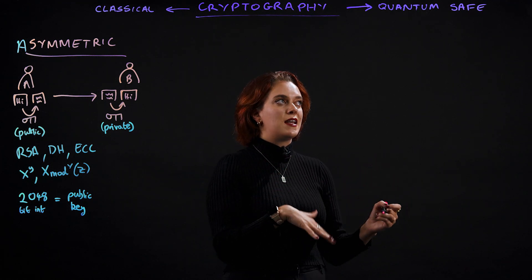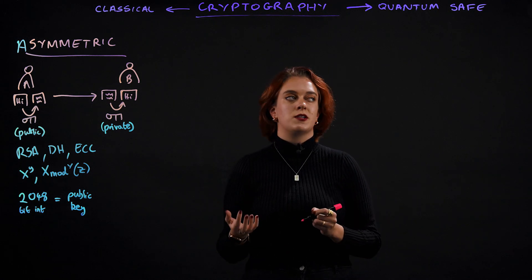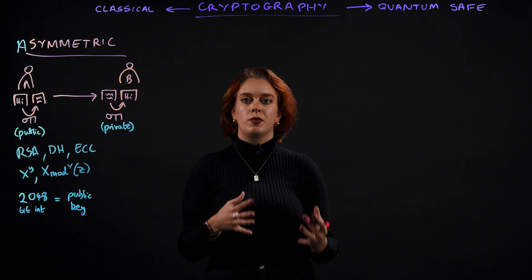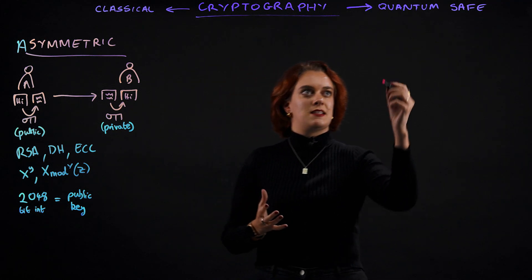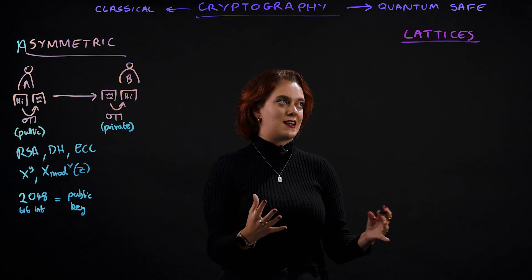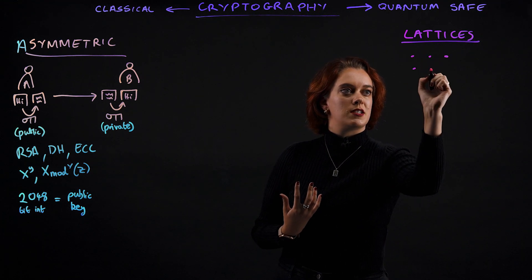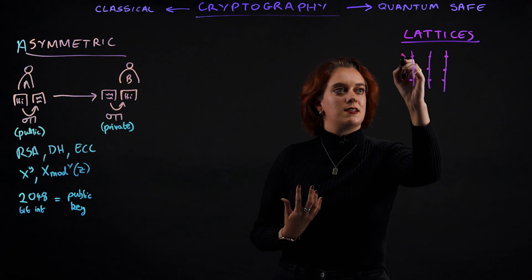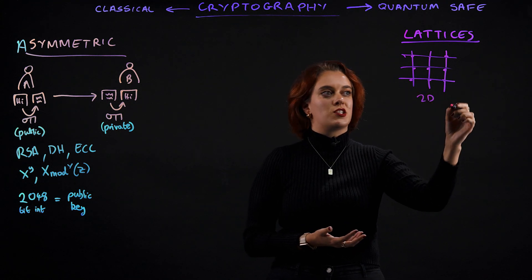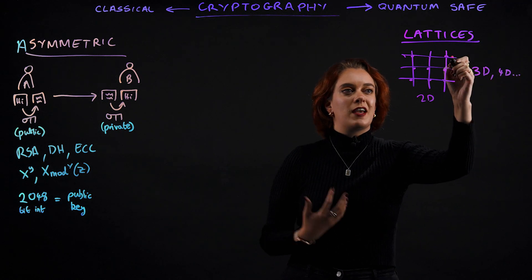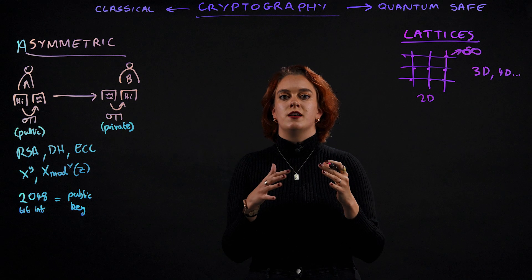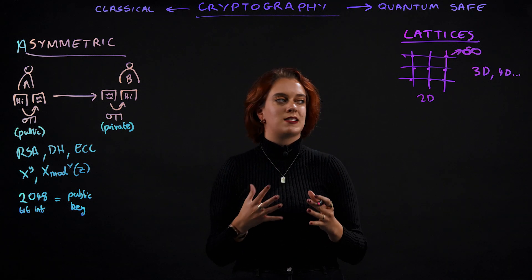Quantum-safe algorithms are based on mathematical problems that neither classical nor quantum computers can solve efficiently. They're normally based on geometric problems rather than numerical ones. One example is mathematical problems that are based on lattices. So let's have a quick review on lattices. Lattices could be very simple like this, just a grid of points with lines in between them that can represent vectors. And this is just a simple two-dimensional lattice, but lattices could have many more dimensions and they can also vary in size.